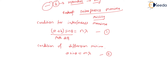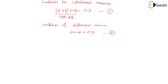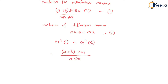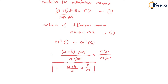To find the condition for missing orders in the double slit, we take the ratio of equation one divided by equation two: (a + b) × sin θ / (a × sin θ) = nλ / mλ. The sin θ and λ cancel on both sides, giving the final equation: (a + b) / a = n / m. This is the equation by which we can find the missing orders of interference maxima.